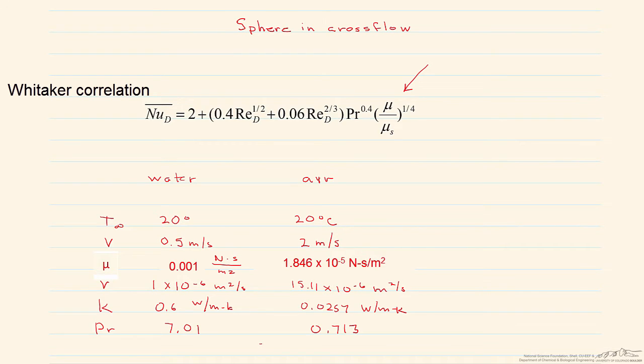In this screencast, we're going to look at a sphere in cross flow and compare the heat transfer from that sphere using two different fluids, one water and the other air. We're going to use the same correlation for both situations since there's only one correlation that's generally used, and this is known as the Whitaker correlation.